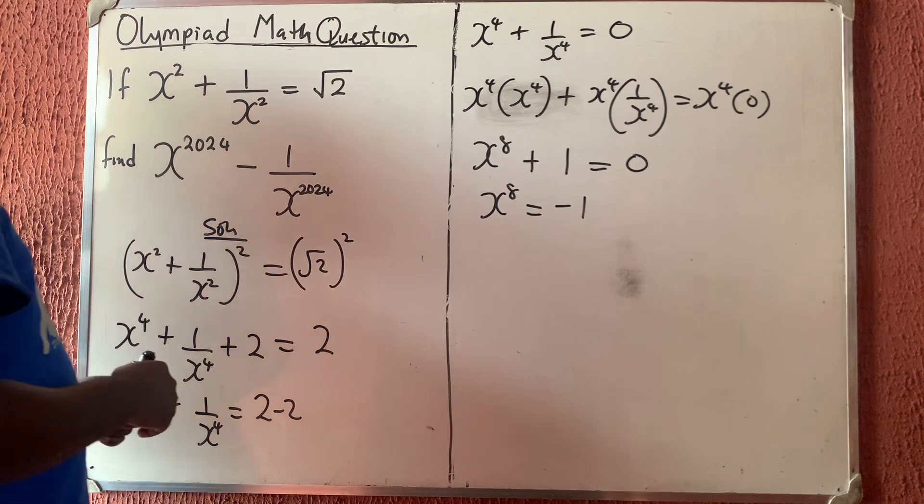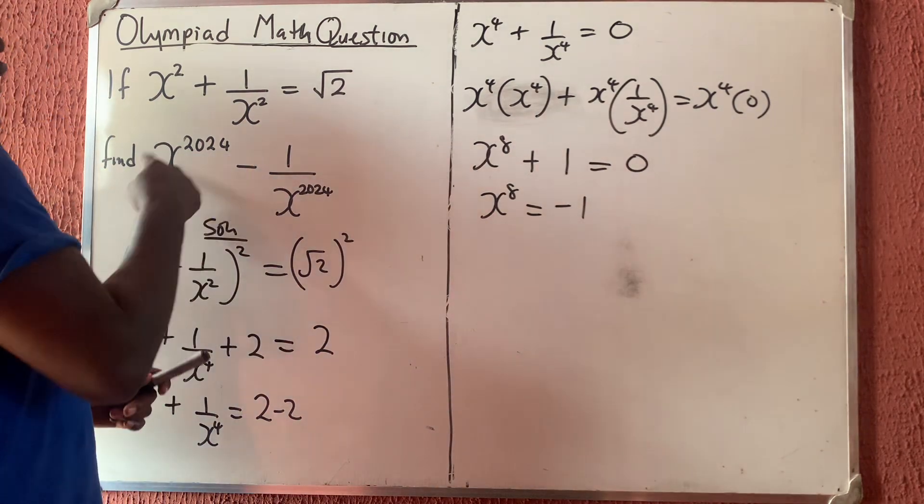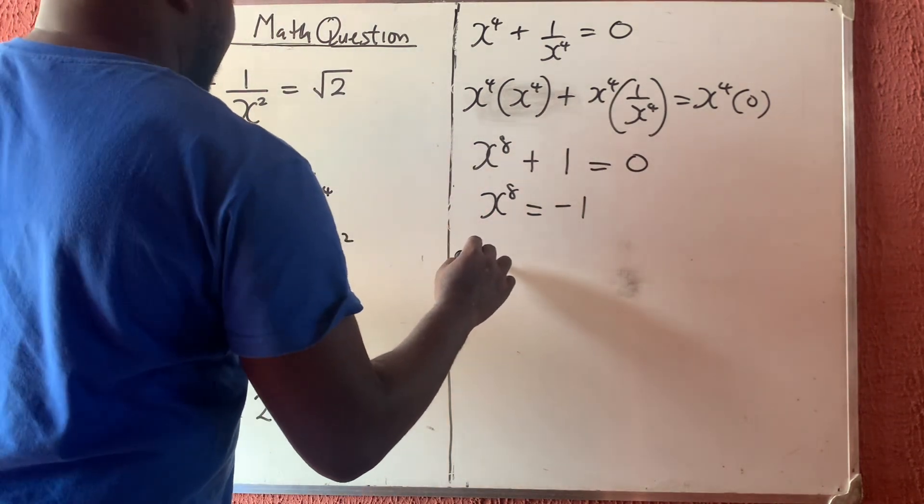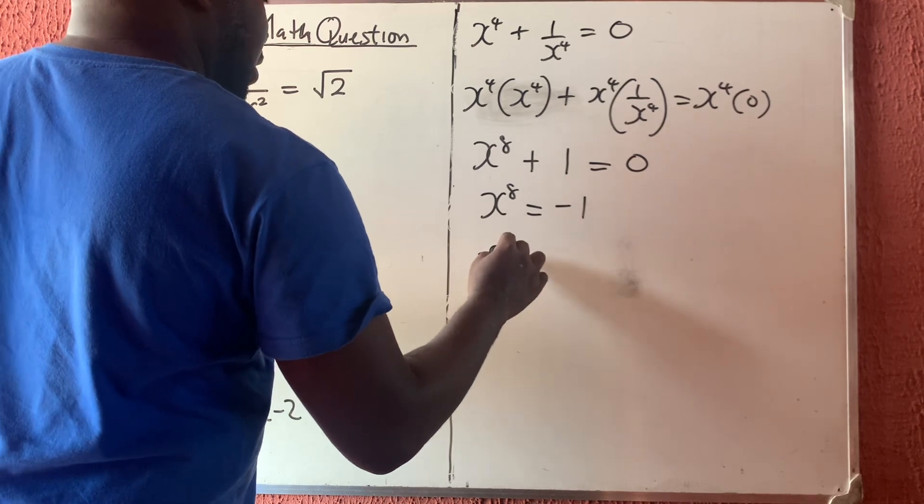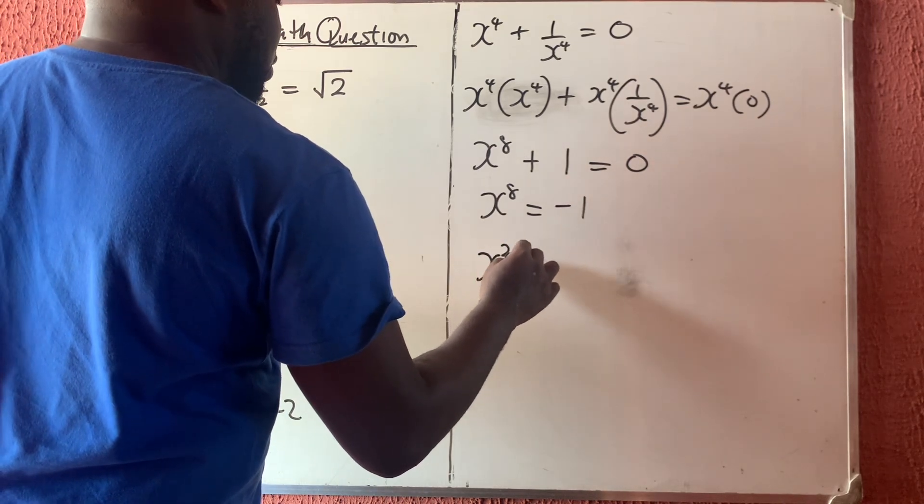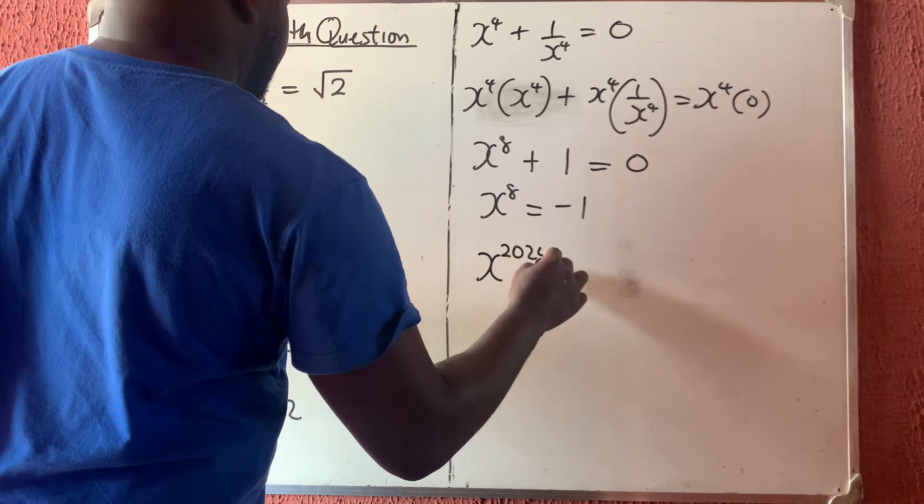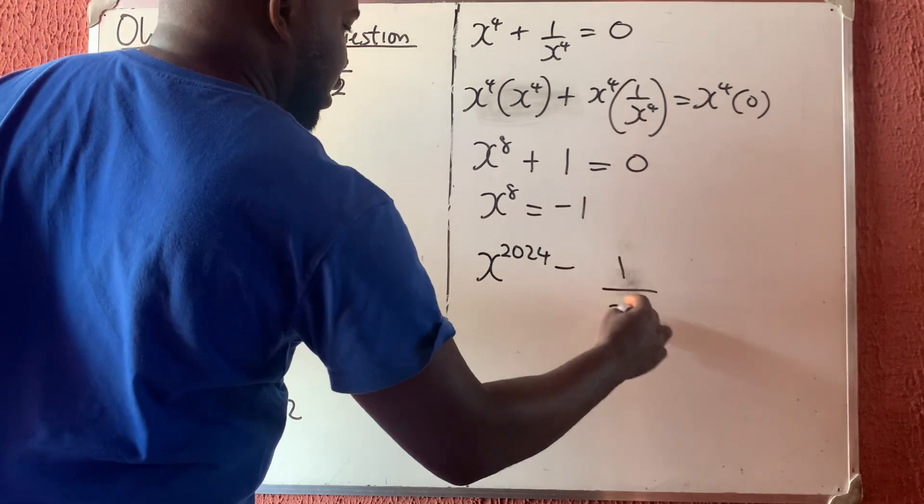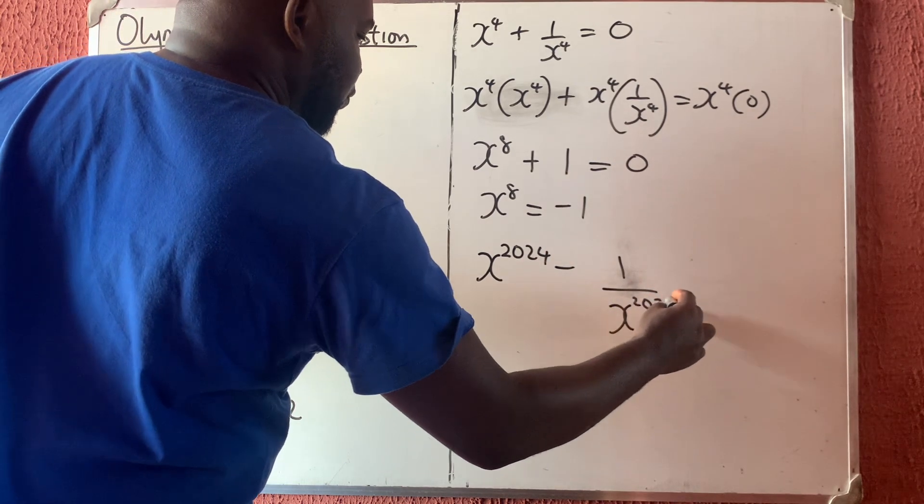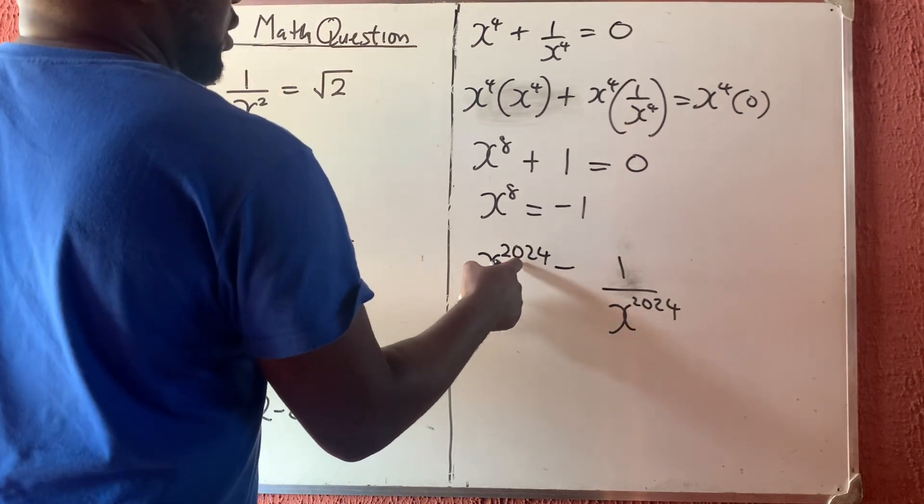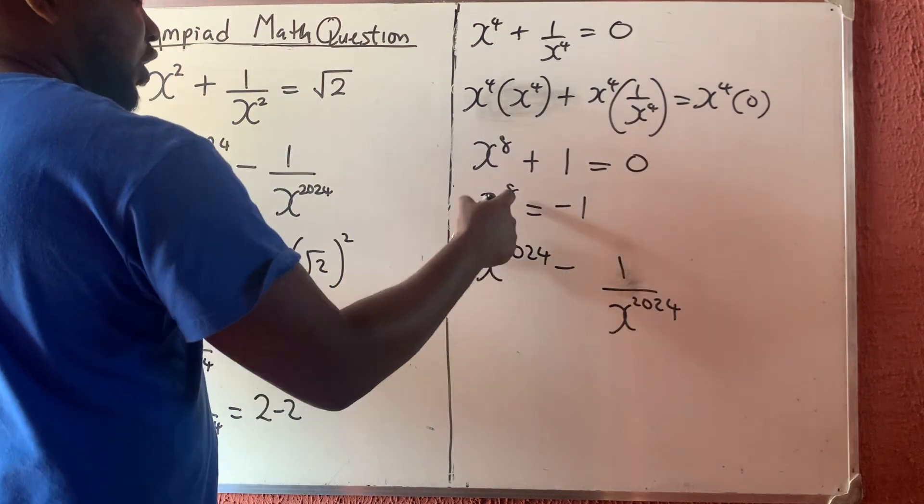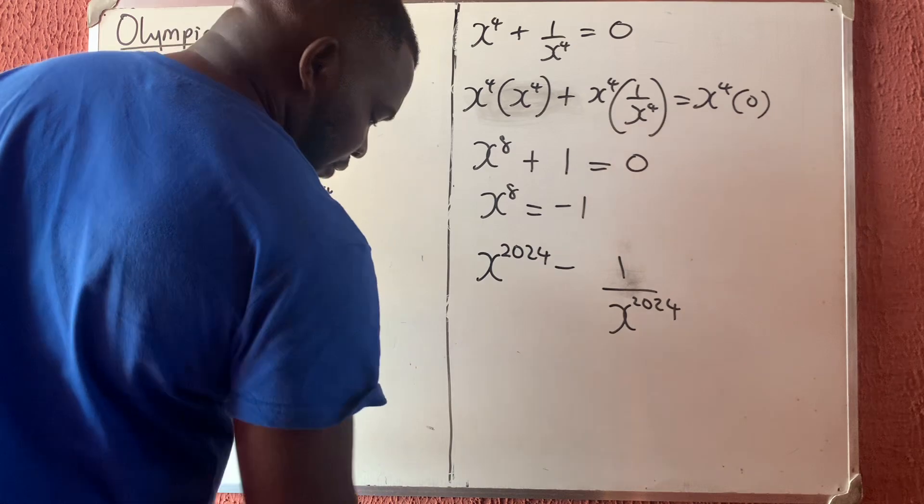Now getting to this place, I'm going to have that let us now come back to what we are given. So I have that this is x to the power 2024 minus 1 over x to the power 2024.